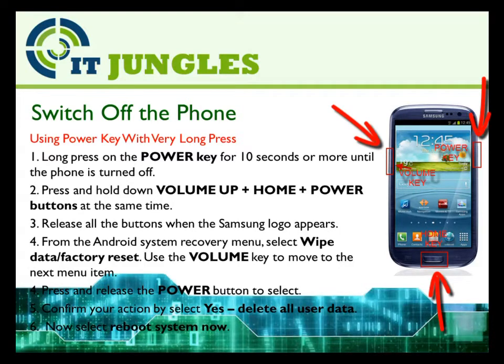Long press on the power key for 10 seconds or more until your phone is turned off. Then all together, press down the volume up plus the home plus the power buttons at the same time. When you see the Samsung logo appears, release all the buttons.